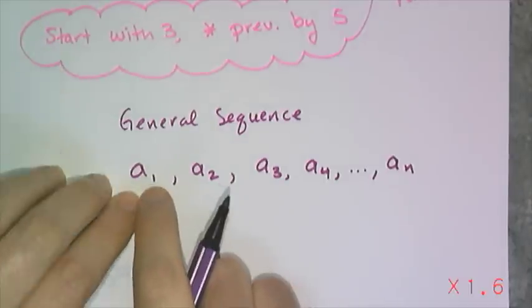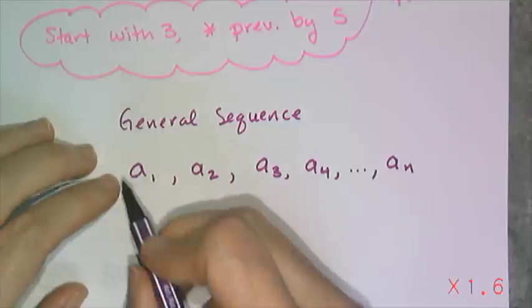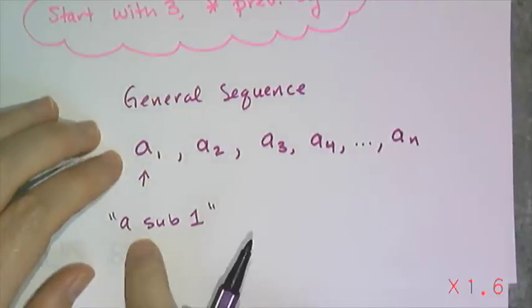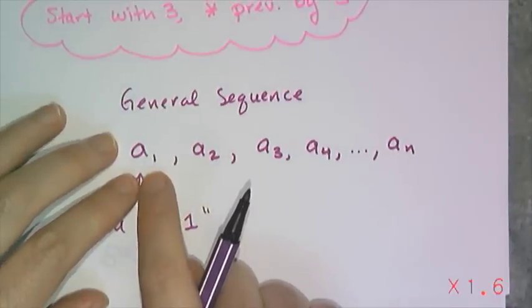These little numbers that are a little bit lower than the letter are called subscript numbers, which is why this is read a sub 1. So that sub is shorthand for subscript, and it tells you what term of the sequence you have.